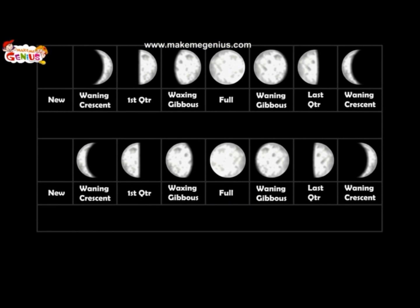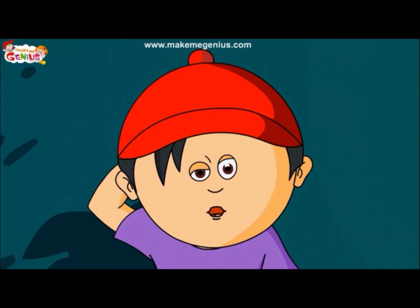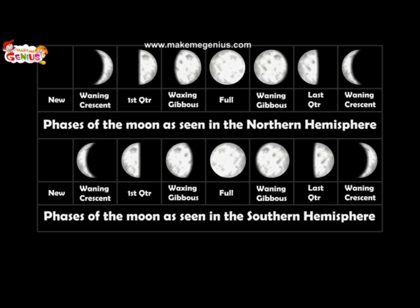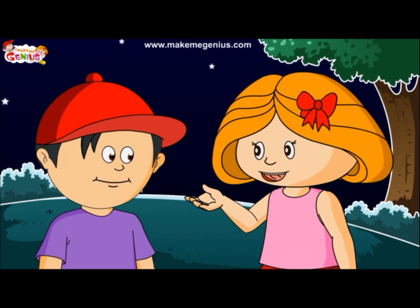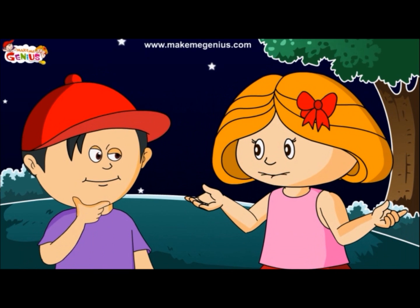The different shapes of the moon are called the phases of the moon. The revolution of the moon around the earth makes the moon appear as if it is changing shape in the sky. From the earth, we see the moon grow from a thin crescent to a full disk and then shrink back to a thin crescent again before vanishing for a few days. Let us wear our astronaut suits and go to the sky to understand the different phases of the moon.